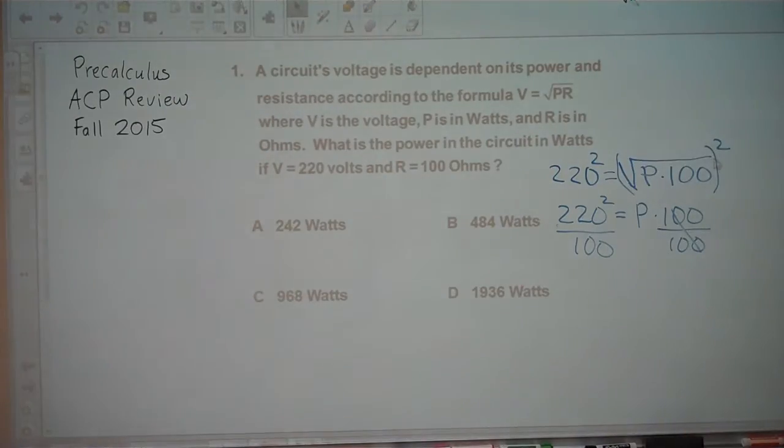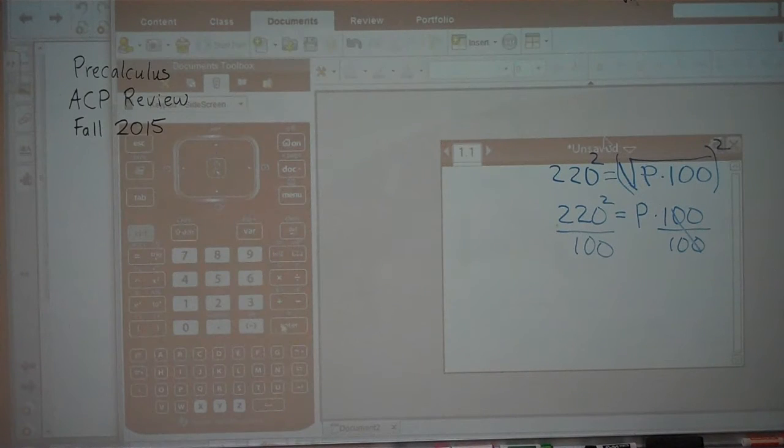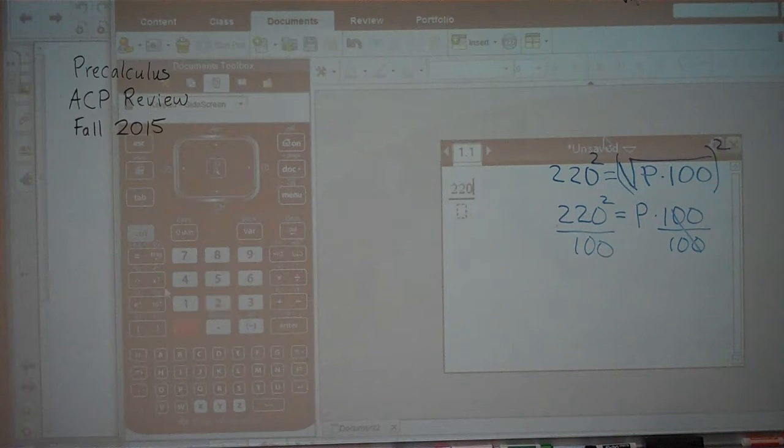Going to our calculator, here we are on our TI-Nspire calculator. We calculate 220 squared divided by 100, and we get as our answer 484.